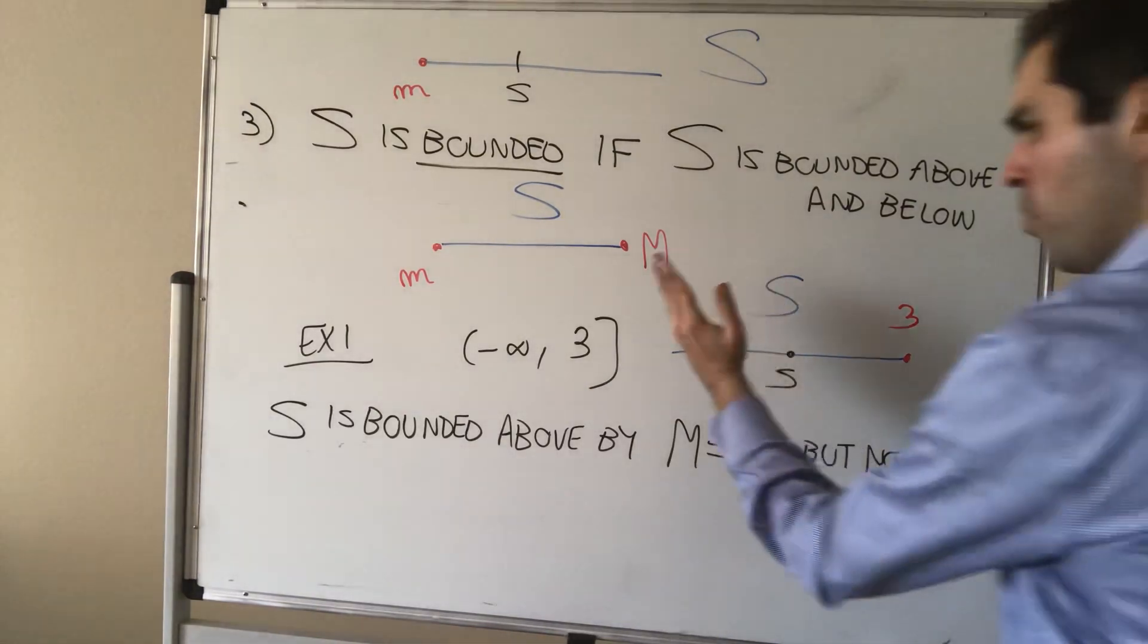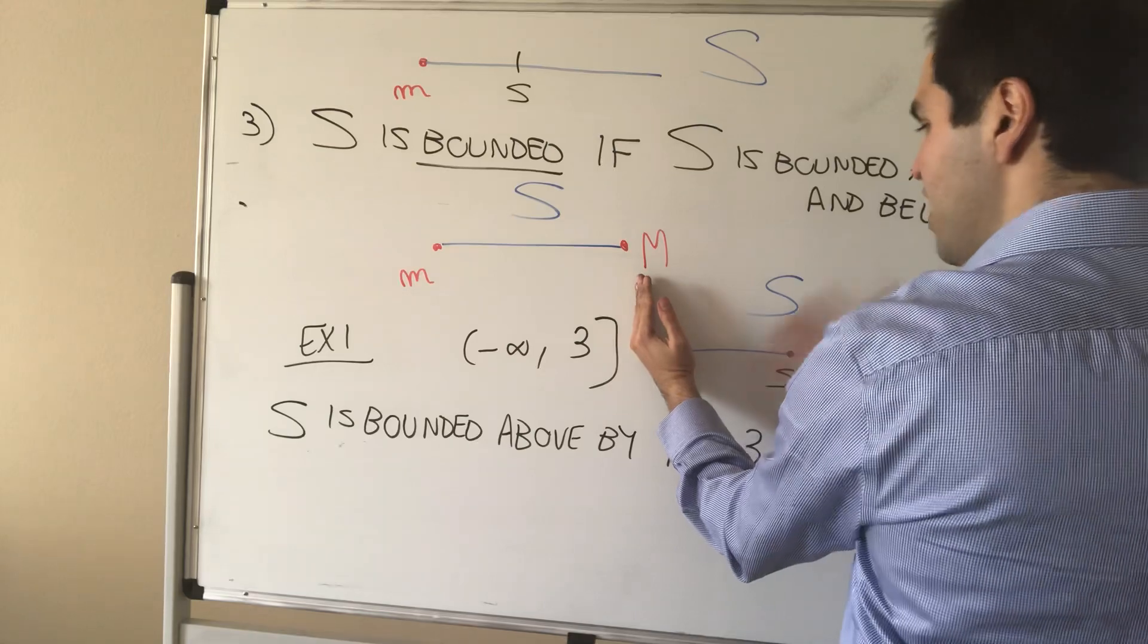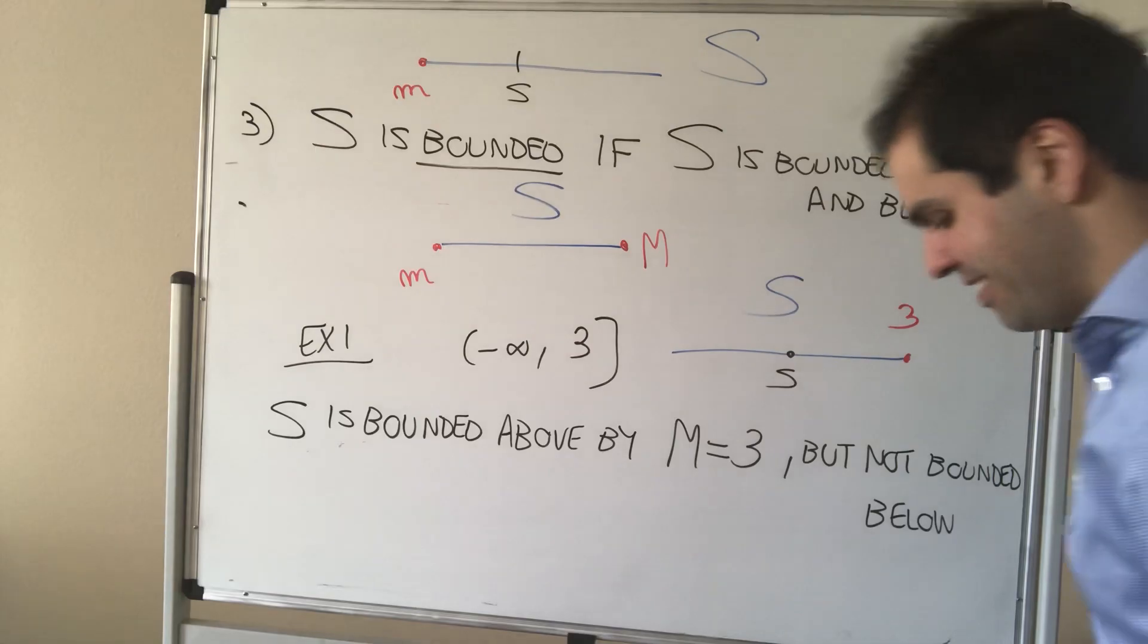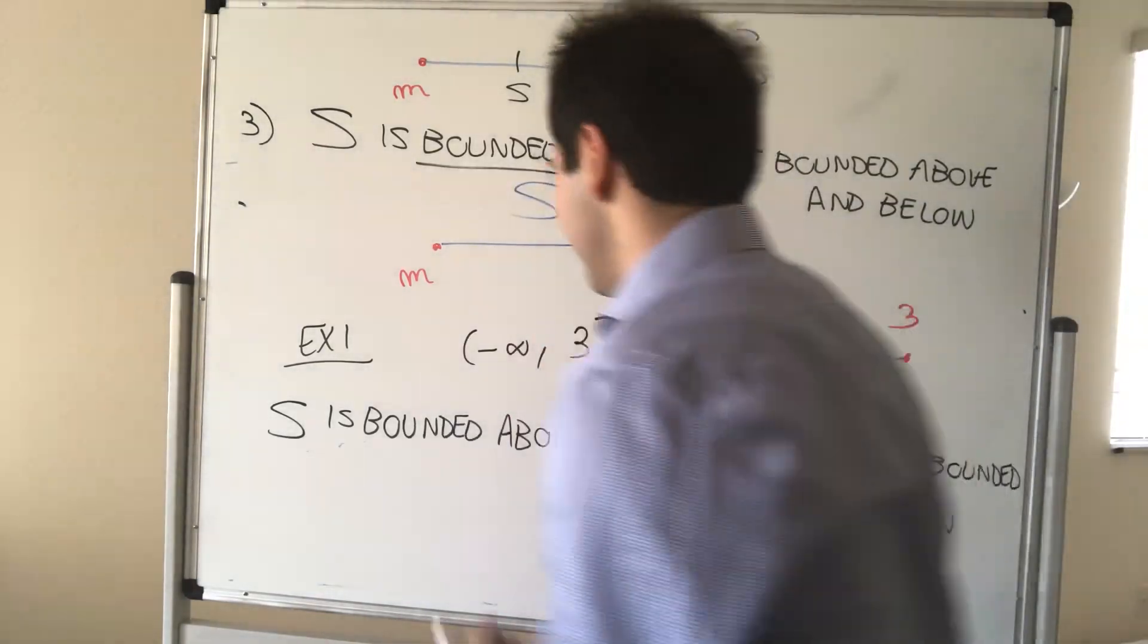In other words, there's no number such that every element of S is greater or equal to that number. That wouldn't work because otherwise it's not minus infinite in one side.